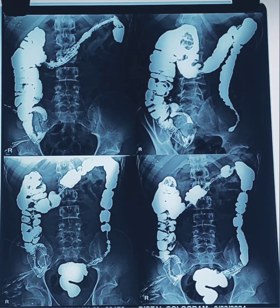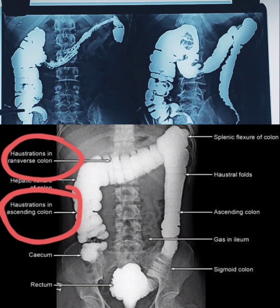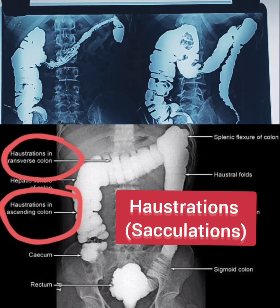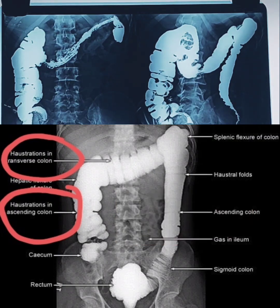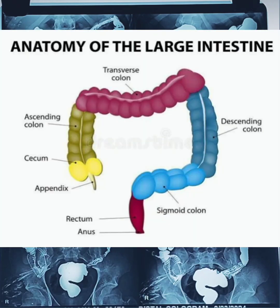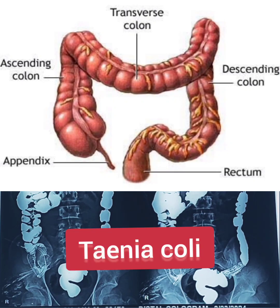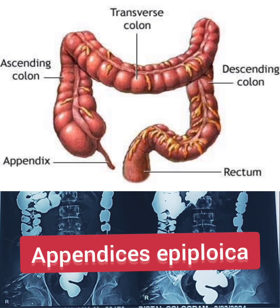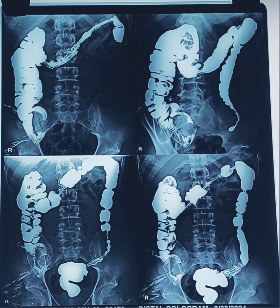In the barium enema study we can see haustrations or sacculations in different parts of the colon, except in the rectum and sigmoid colon where haustrations are not present. Other features of the colon include taenia coli and appendices epiploicae, though these are not demonstrable on barium enema.